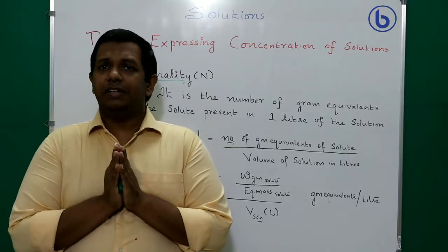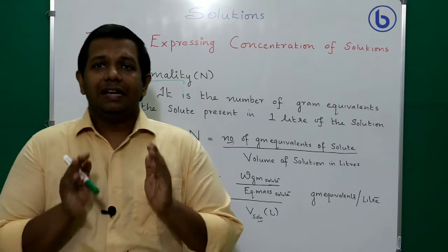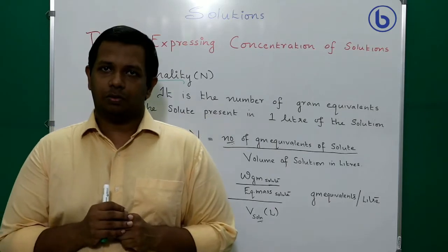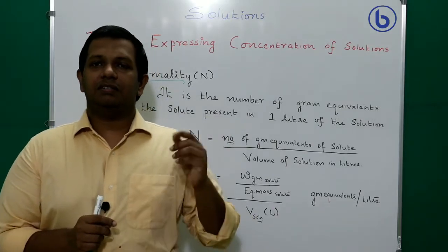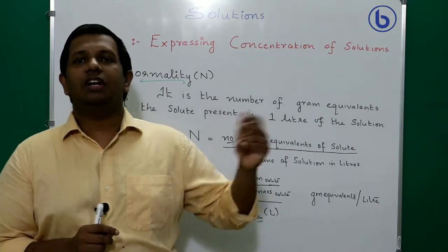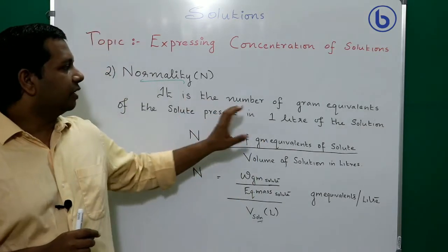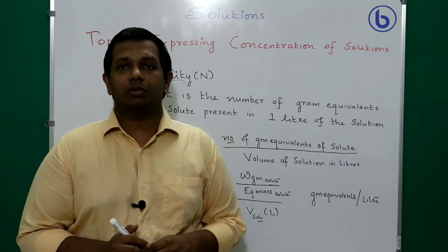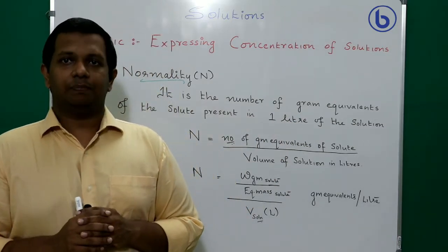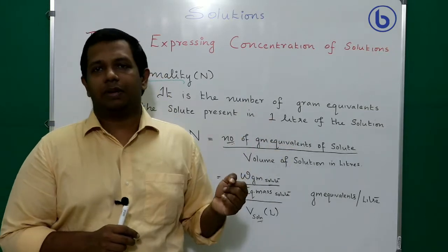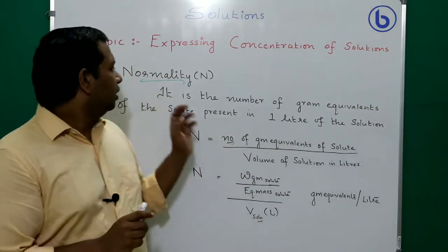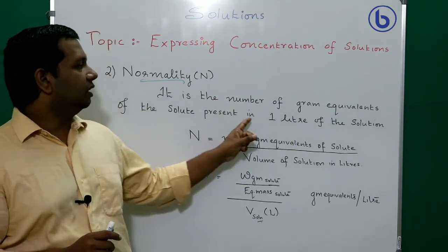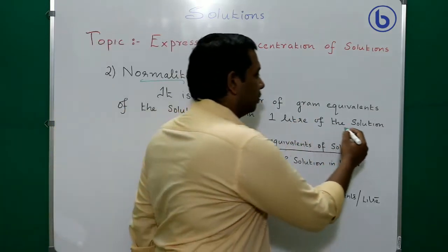First, let me define normality. Normality is the number of gram equivalents of the solute present in one liter of the solution. Compare this to molarity, which is the number of moles of the solute present in one liter of the solution. The only difference is that instead of moles, we use gram equivalents.